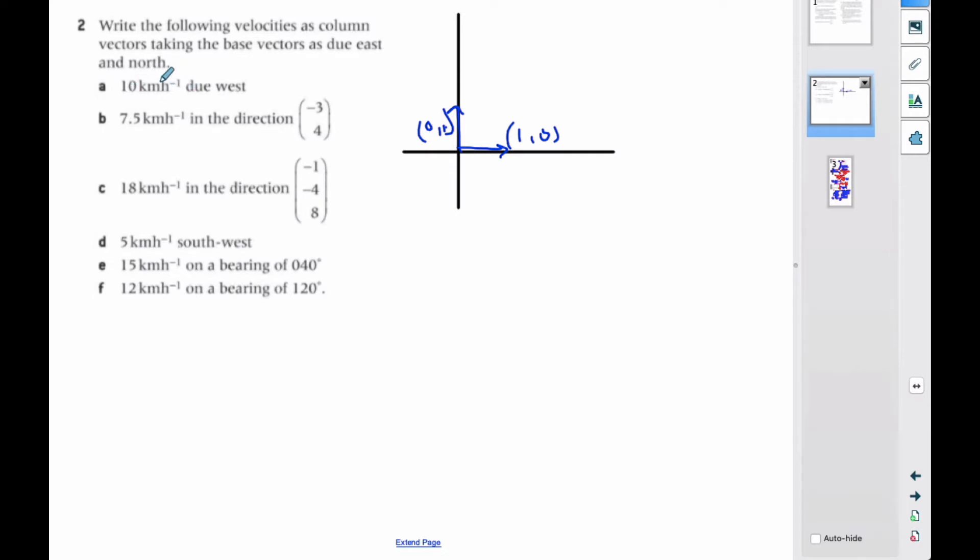And so if I want to go 10 kilometers due west, I want to go in this direction, which means it's going to be (-10, 0). Because that's the magnitude exactly west.